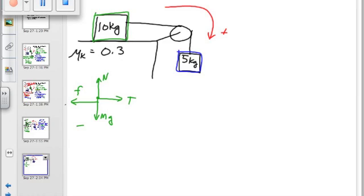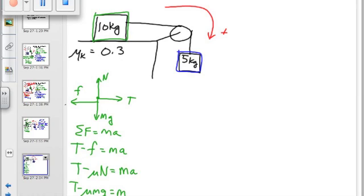So solving the free body diagram, F equals mA. Which one's positive? Tension. Tension minus friction equals mA. Now what is friction equal to? Equals mu times normal force. And what is the normal force equal to? Mg. So tension minus mu mG equals mA.